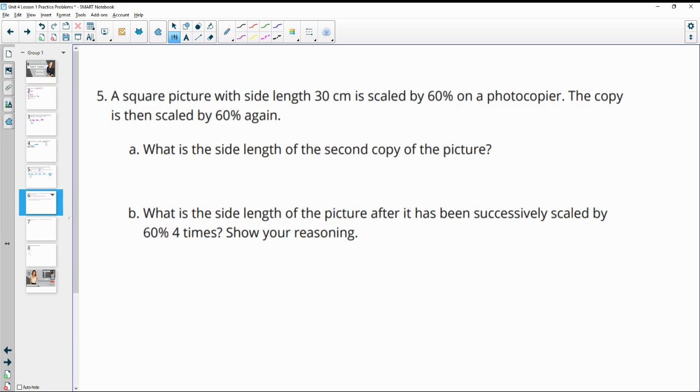Number five: a square picture has a side length of 30 centimeters and it's scaled by 60% on the photocopier. The copy is then scaled again by 60%. So what is the length of the second copy? So we started at 30 and then we're going to multiply by 60% or 0.6. So 30 times 60% is 18.